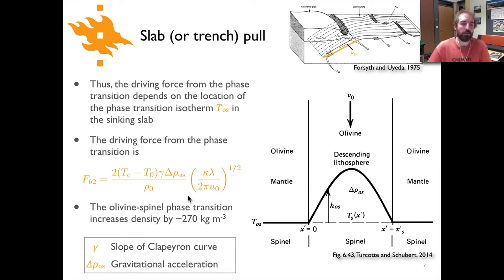The relationship looks something like this. You can see here the temperature difference that we have seen previously between the center of the convection cell and the temperature at the base of the lithosphere or the lithosphere-asthenosphere boundary. Now we have a gamma term in there and that's the slope of the Clapeyron curve, so that would have been from the plot on the previous slide.